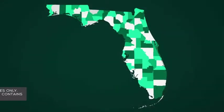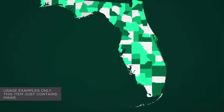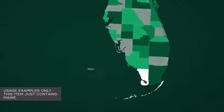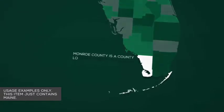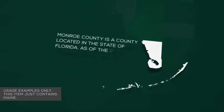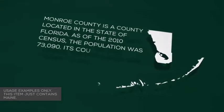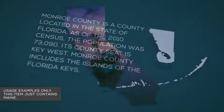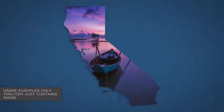Zoom in to areas of interest and hide the layers you don't need to focus on certain counties. Animate individual counties and add your own text and camera moves as required.